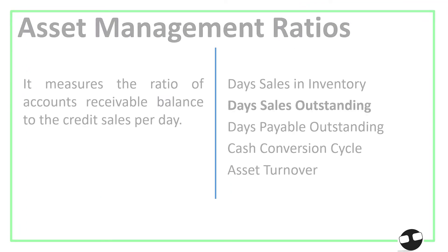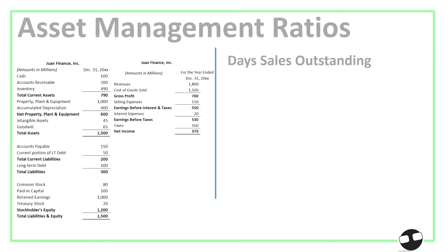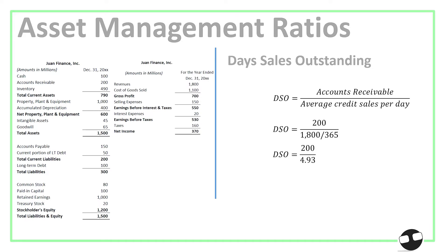Next, we have Days Sales Outstanding (DSO). It measures the ratio of accounts receivable to credit sales per day. The formula is accounts receivable divided by average sales per day, so that's 200 divided by 4.93, which gives us 40 days.